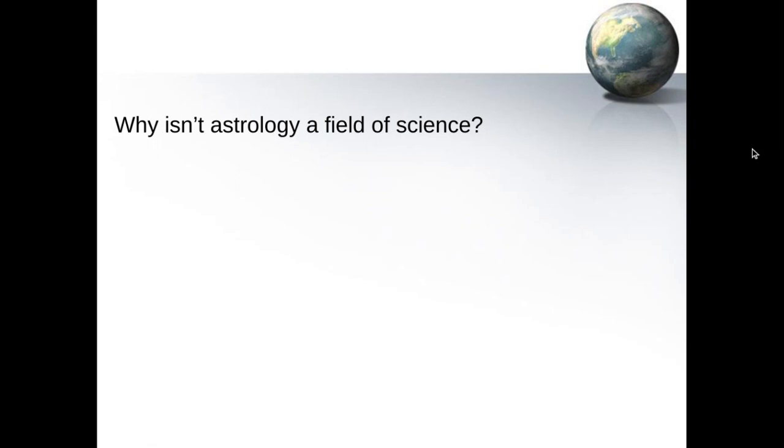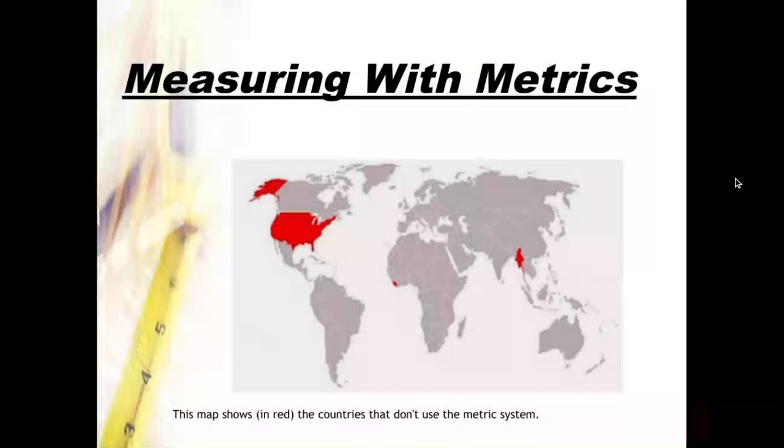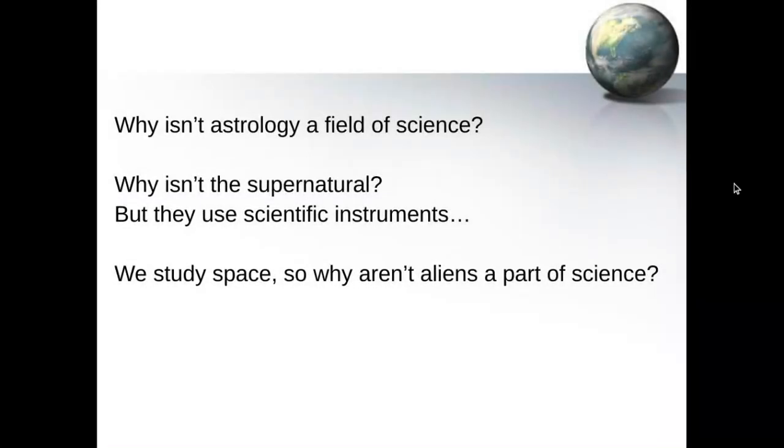So going back to our question, why isn't astrology a field of science? Why isn't the supernatural science? They use scientific instruments. We've all seen the shows. We study space. So why aren't aliens a part of science? The answer lies in the fact that even though we might use scientific instruments, those tests cannot be replicated. Just because they look scientific, they might not be actually showing us what we think they're showing. So these fields can't be replicated. They're not reliable data pieces.